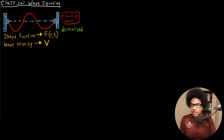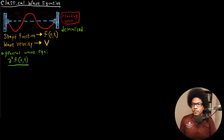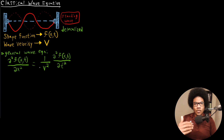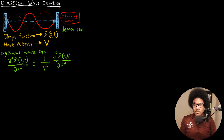With these two properties defined, we can build up the general wave equation. The general wave equation looks like this: on the left-hand side, the second derivative of the shape function with respect to position is going to be equal to one over the square of the wave velocity times the second derivative of the shape function with respect to time. This is a second-order differential equation that relates the change in position of the shape function to how it's changing over time.